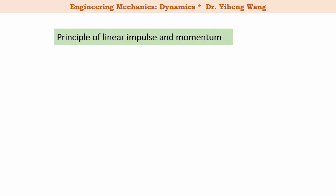Therefore the previous equation can now be written as the principle of linear impulse and momentum. The summation of I, which is the total linear impulse caused by external forces associated with the process from state one to state two, equals to the change in the particle's linear momentum L.